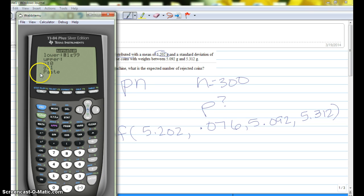If yours shows normal CDF on the calculator, you'll put this in just like I have it. Here we're going to put our lower limit, 5.092, and then our upper limit, 5.312. Our mean, 5.202, and our standard deviation, 0.076. And then we'll hit enter for paste.